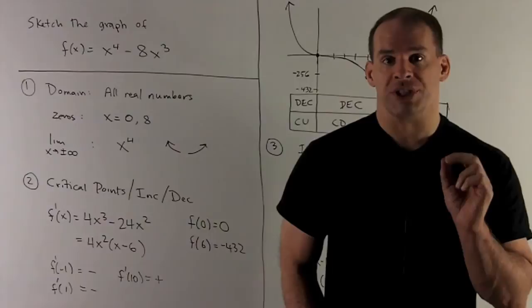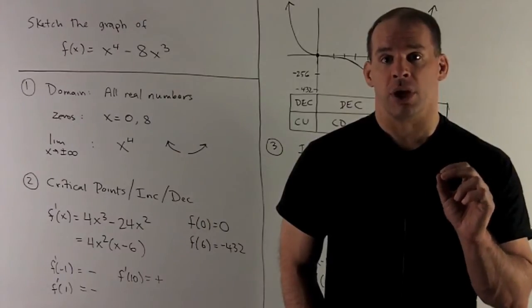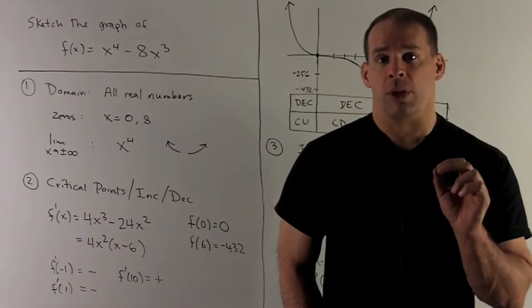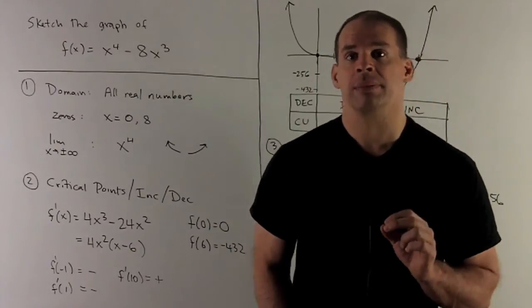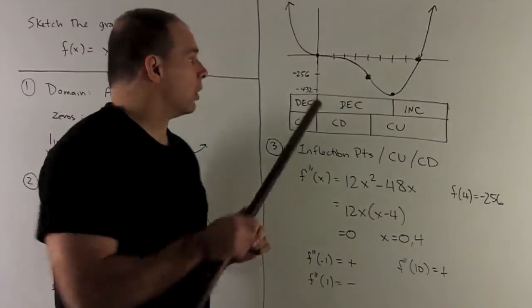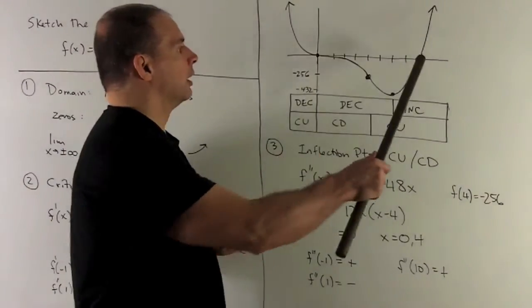Next, we can look for zeros of our function. If we factor, we'll see that we'll have zeros at x = 0 and x = 8. So we'll mark them off on the x-axis, here and here.